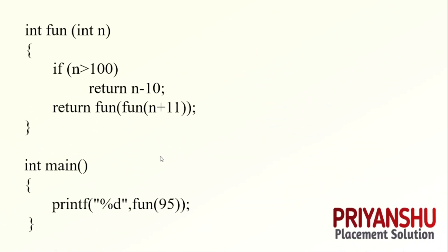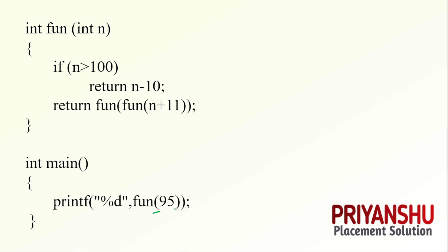This is a very interesting recursion-based question. function(95) is called. If n is greater than 100 — for 95, condition is false. It moves to the else part, which returns function(function(95 + 11)) = function(function(106)). So we call the inner function first.